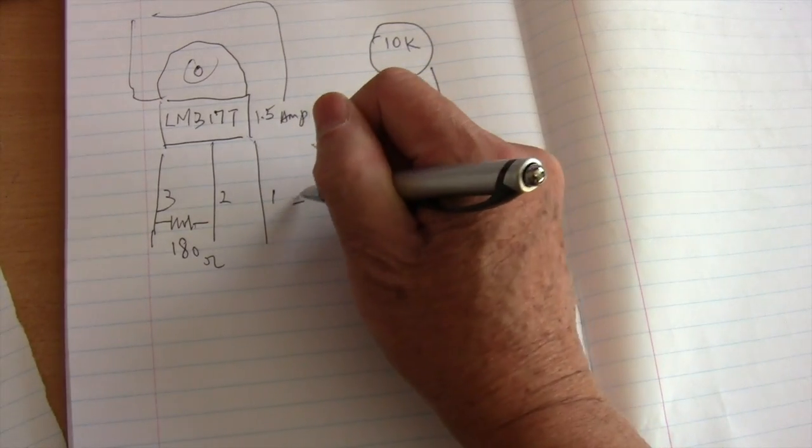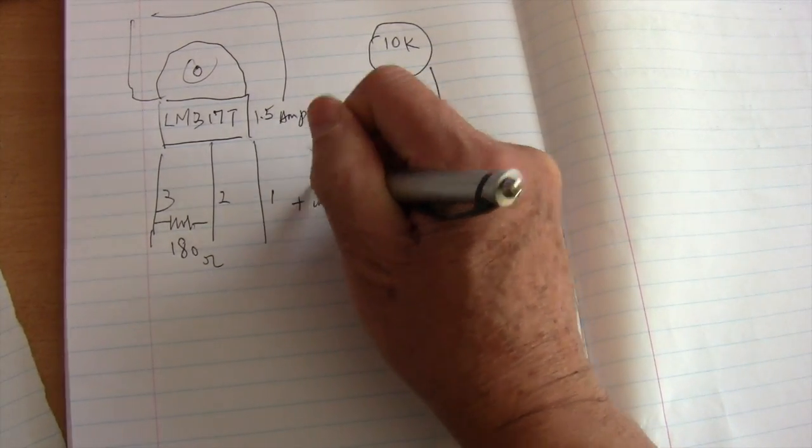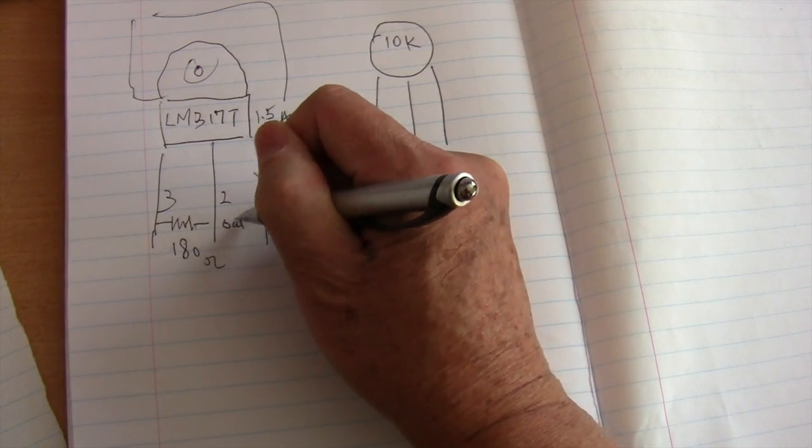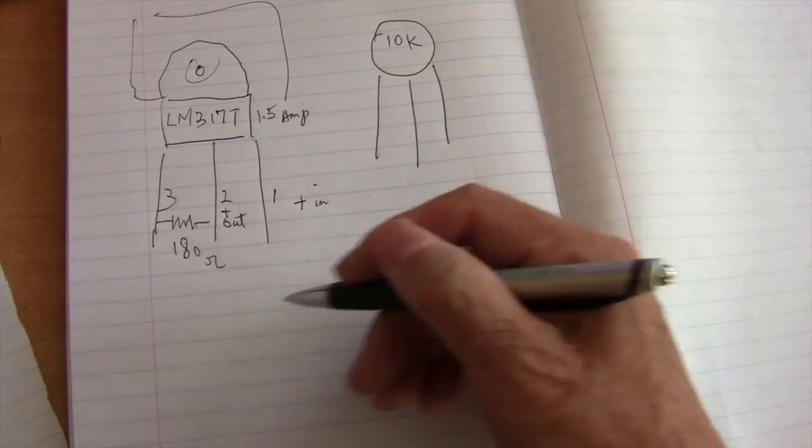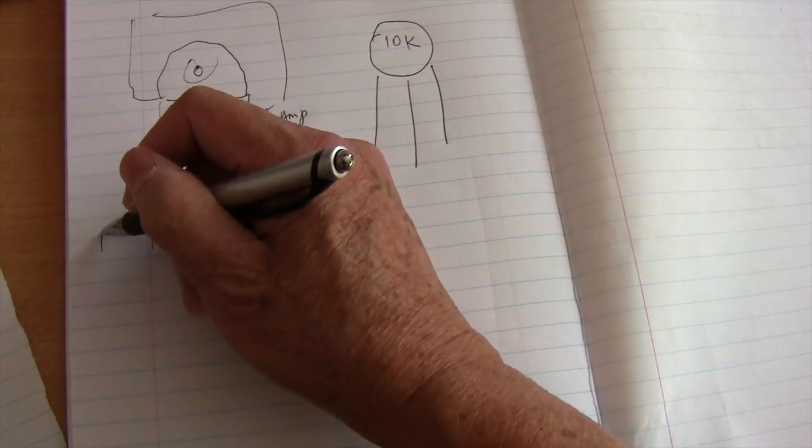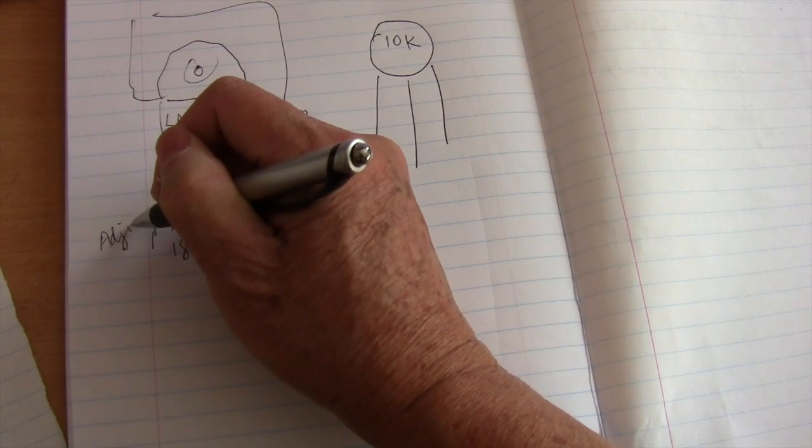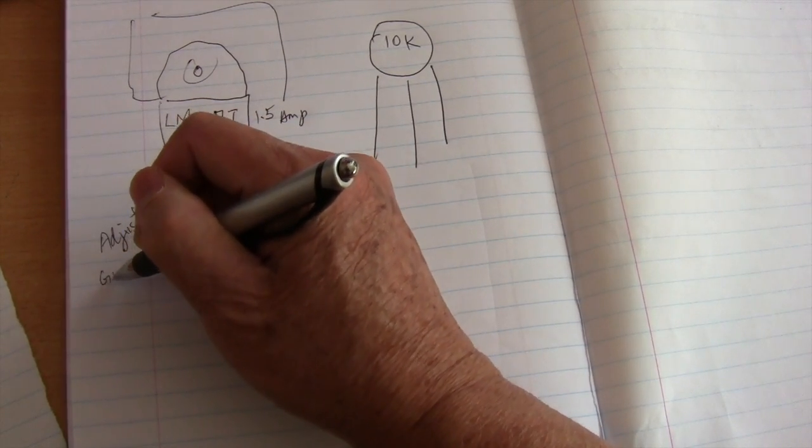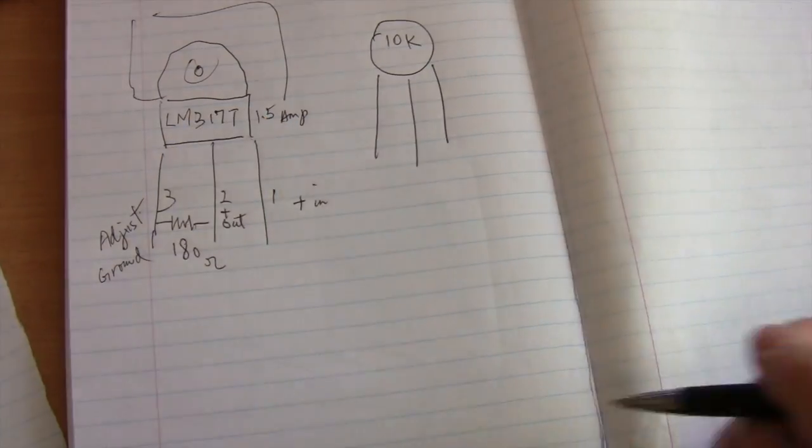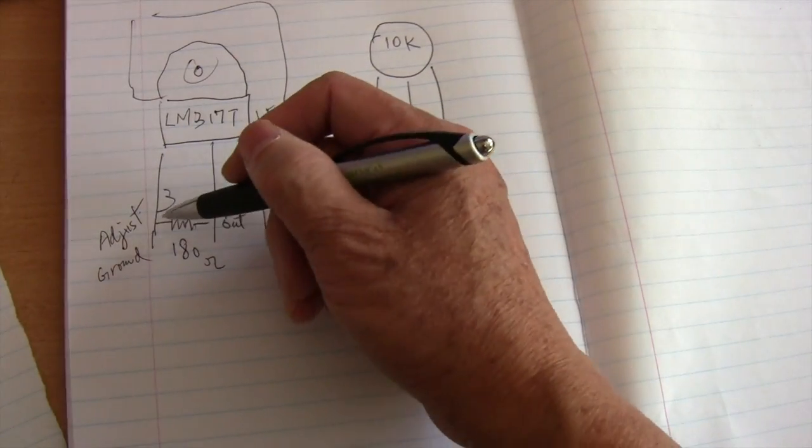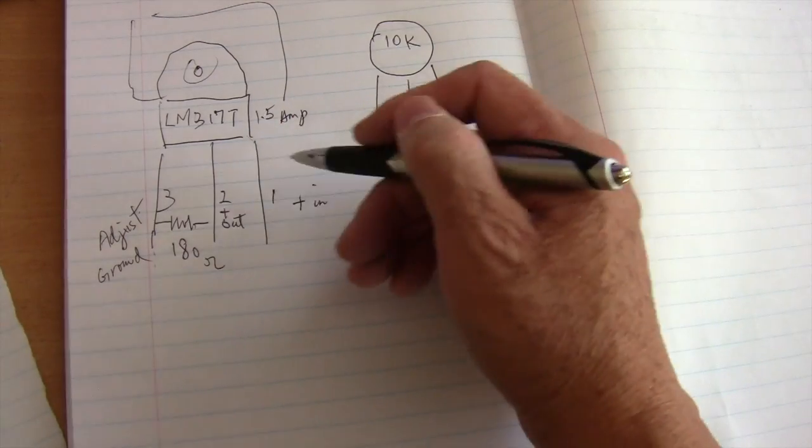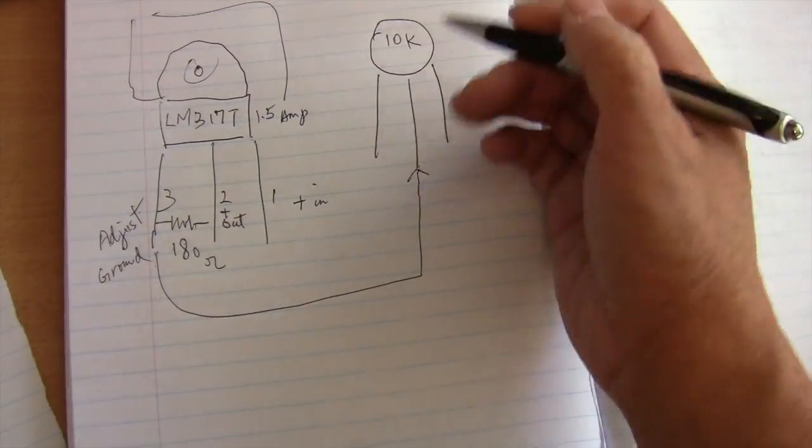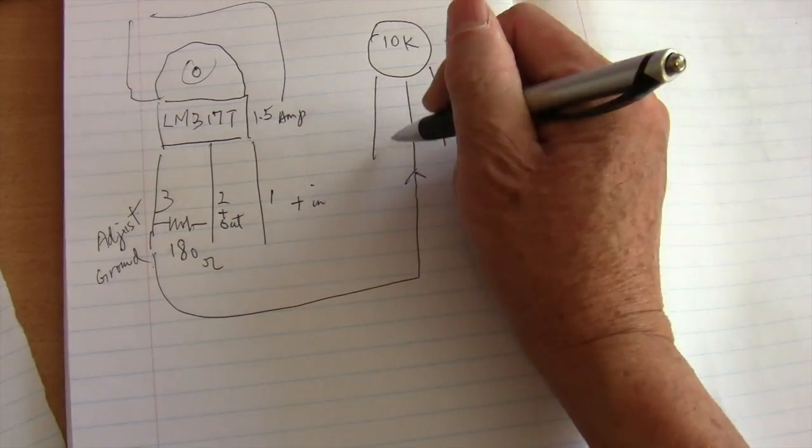One is the positive in, and two is the positive out, and three is the adjust pin or the ground pin. And the pin three is connected, I connect it this way to the middle of the 10k pot.